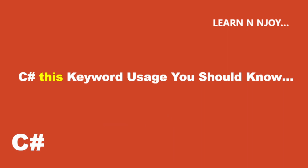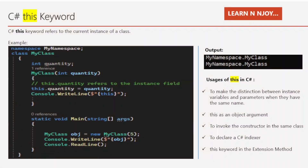The C# 'this' keyword refers to the current instance of a class. Let's understand with the help of an example. There is a class named MyClass under MyNamespace. I have declared 'quantity' as an int data type, and there is a parameterized constructor that accepts one parameter also named 'quantity'. Notice the class variable name and the constructor parameter name are the same. Inside the constructor I have written 'this.quantity = quantity', assigning the parameter value to the instance field, because 'this' represents the current instance of the class.